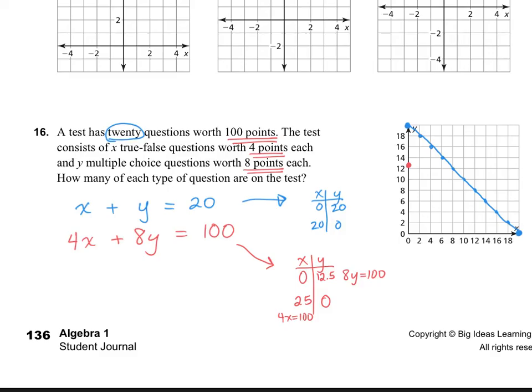So 25 is not on my graph, but 12 and a half is. So 12 and a half is about here. So since 25 is not on my graph, I do need to find the slope of this line. So to find the slope, I'm going to go ahead and solve for y. So I'm going to subtract 4x on both sides, and I get 8y = -4x + 100.